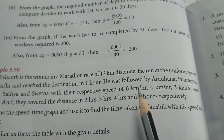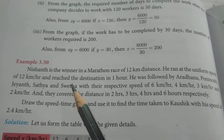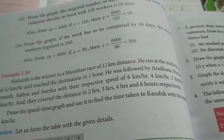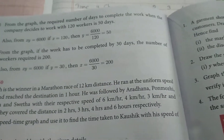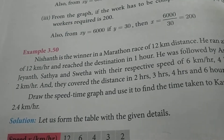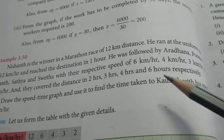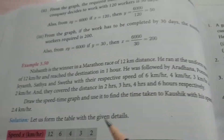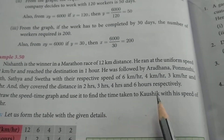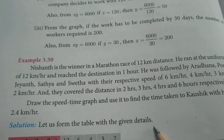He was followed by Aradhana, Ponmuli, Jayant, Sathya, and Sveta with their respective speeds of 6 km per hour, 4 km per hour, 3 km per hour, and 2 km per hour. They covered the distance in 2 hours, 3 hours, 4 hours, and 6 hours respectively. Draw the speed-time graph and use it to find the time taken by Kaushik with a speed of 2.4 km per hour.